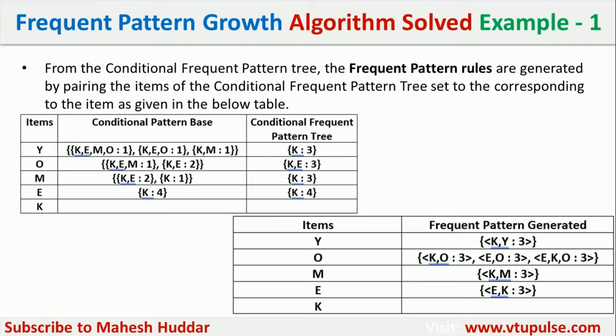In this video we understood how to find frequent pattern rules and write association rules using the Frequent Pattern Growth algorithm. I have solved a few more examples related to the Apriori algorithm — links for those videos are in the description below. If you liked this video, please like, share, and subscribe for more videos, and press the bell icon for regular updates. Thank you for watching.